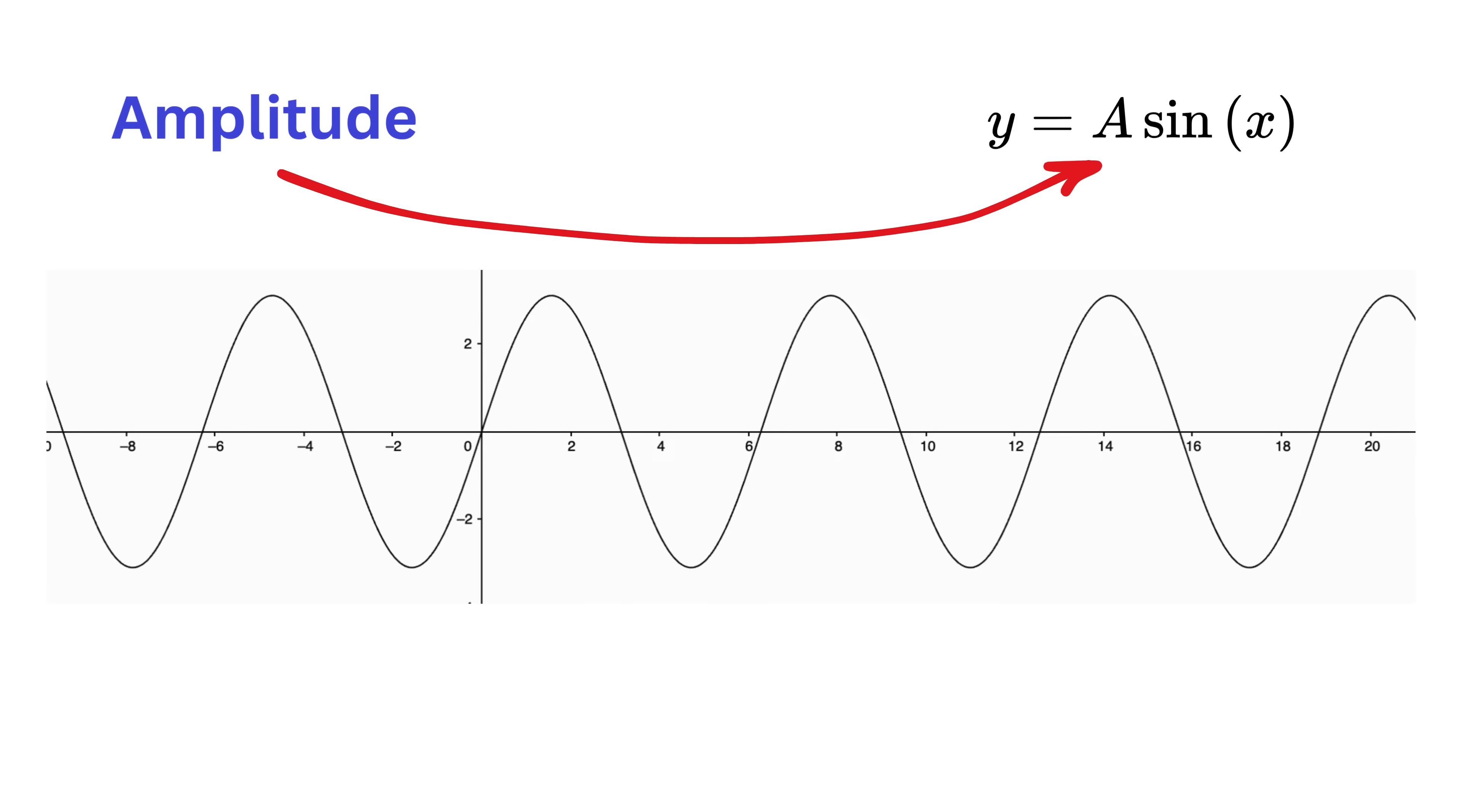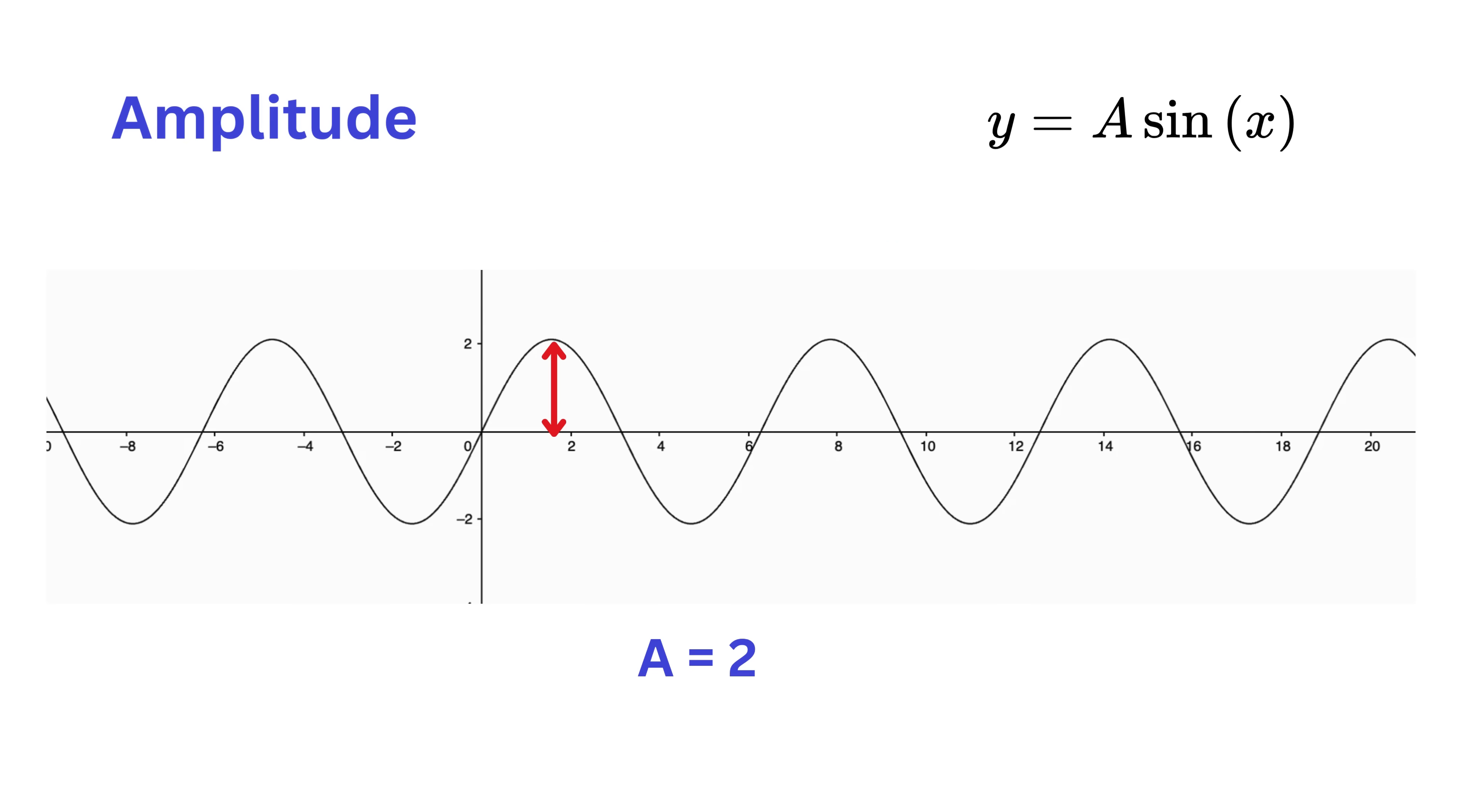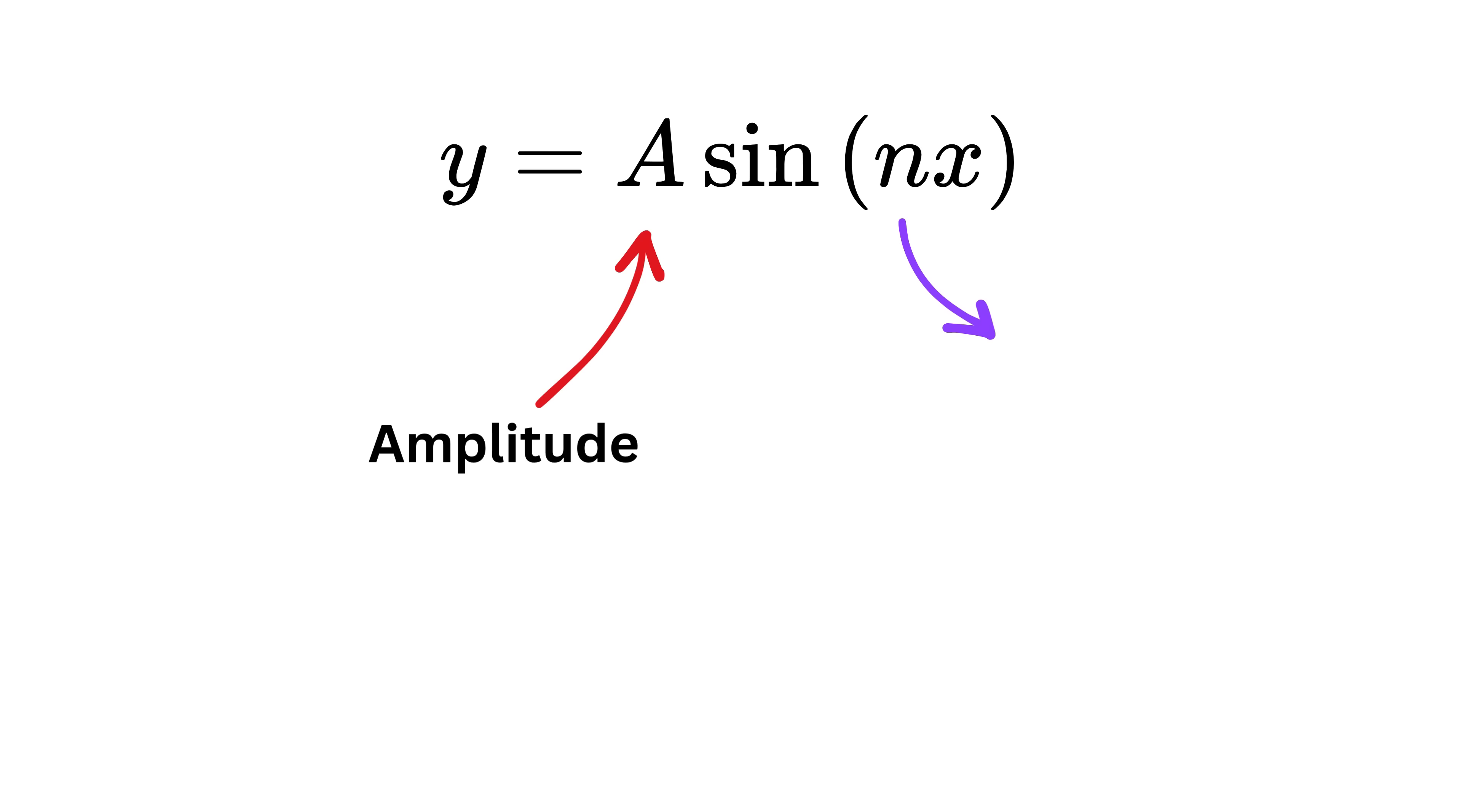Now let me tell you about the amplitude of a wave. In a wave like a sin(x), the letter a is called the amplitude. The amplitude tells us how high or how strong the wave goes. For example, if a is 2, the wave rises up to plus 2 and goes down to minus 2. If a is 1, it rises only to plus 1 and down to minus 1. So, the amplitude controls the size of the wave, while the sin(nx) controls its shape and frequency.